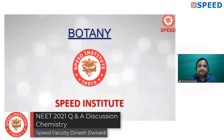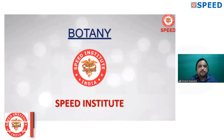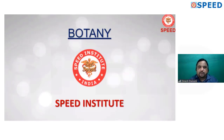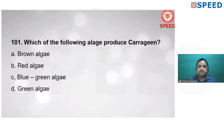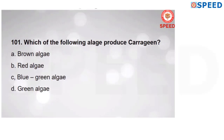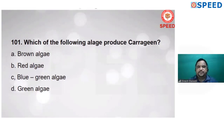Good morning, dear students. I am a botany professor. Today I will discuss NEET botany questions. My heartiest congratulations to all students for their success. Question number 101 is a botany question: which of the following algae produce carrageenan? Carrageenan is already produced by Chondrus crispus alga, which is an example of red algae — Rhodophyceae. So red algae, alternate B, is correct.